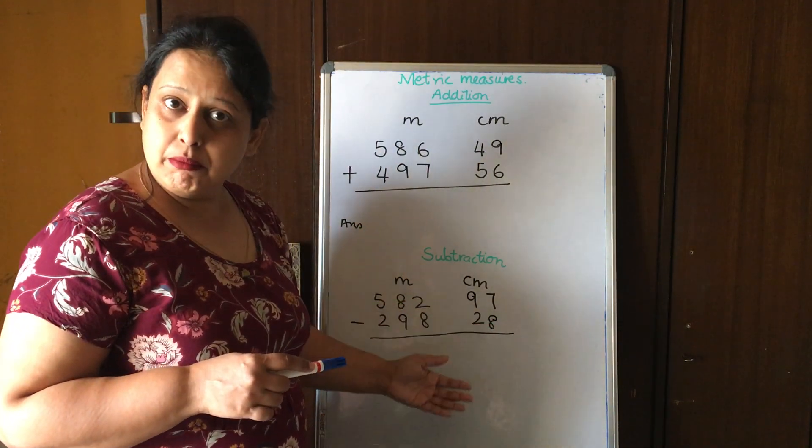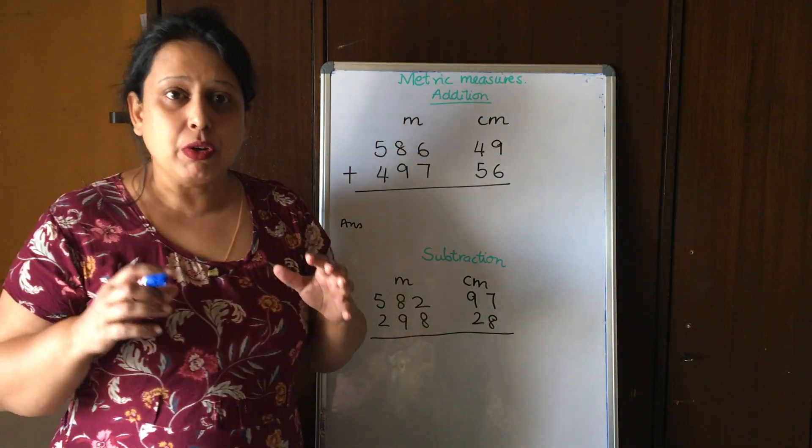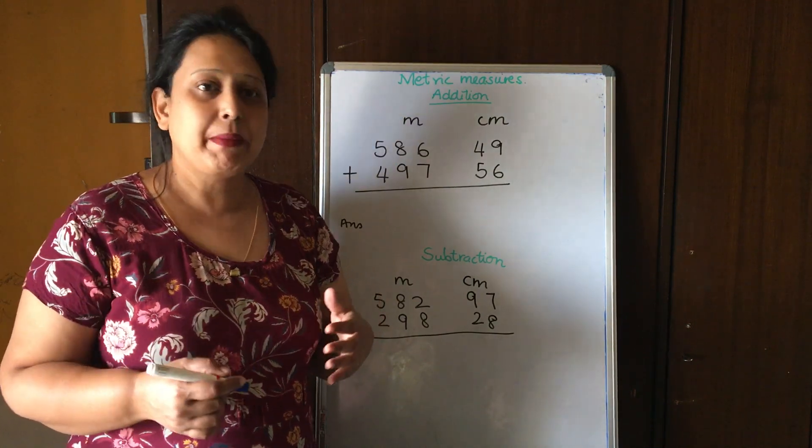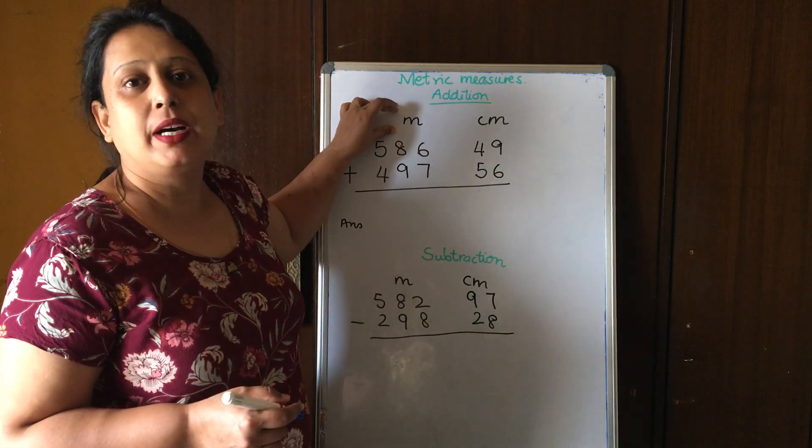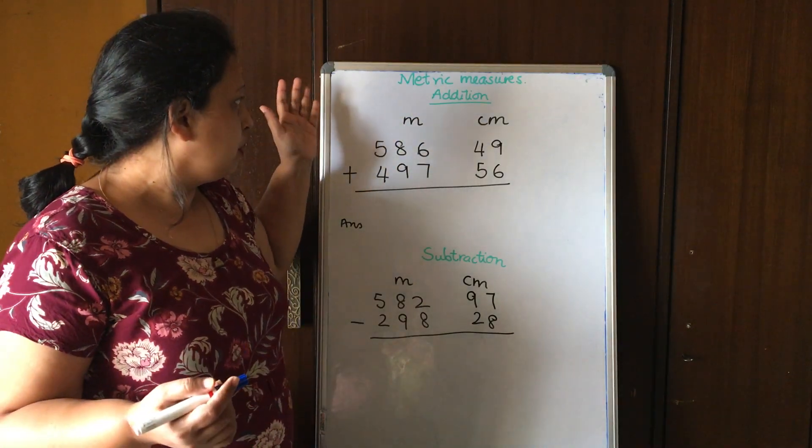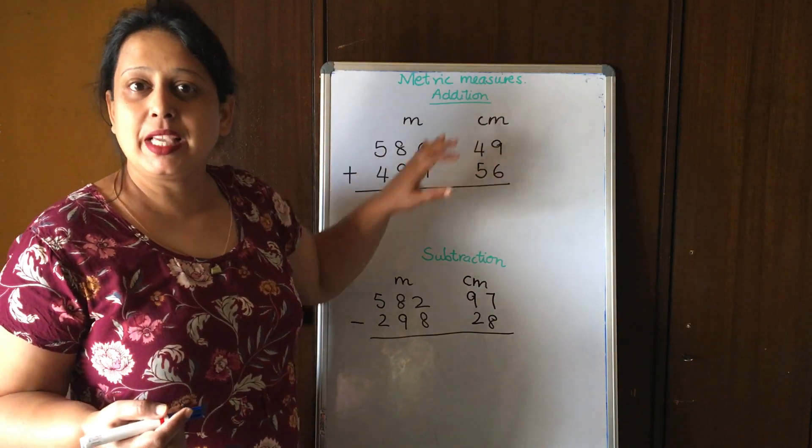Now we know the concept of subtraction. What we do is when we are doing money, we just put the value - your rupees and pesi. When we do metric measures, we put these units here.